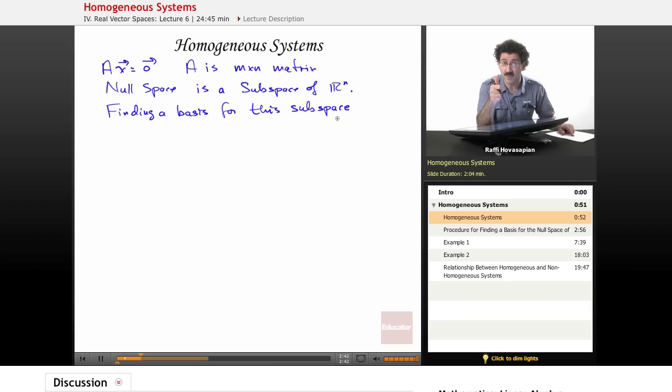Again, it spans the space that we're talking about, and the vectors are linearly independent. In this case, the space that we're talking about is the null space, the space of solutions to the homogeneous system, Ax equals 0.